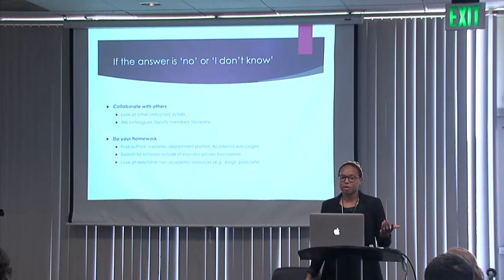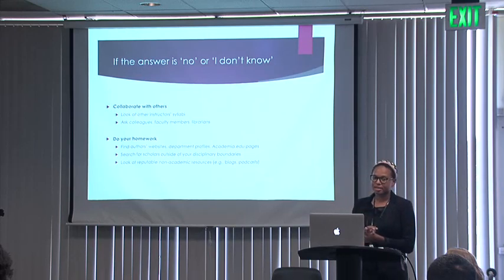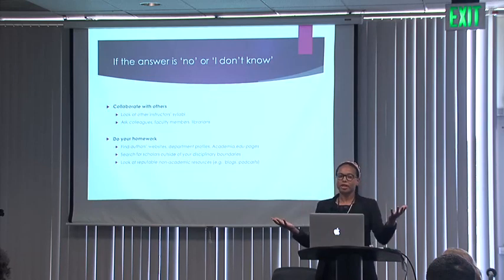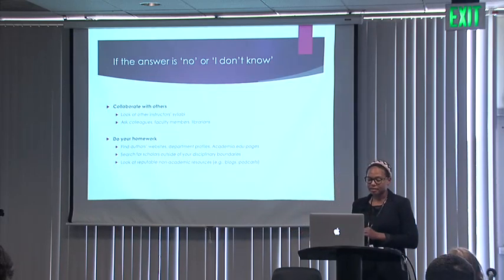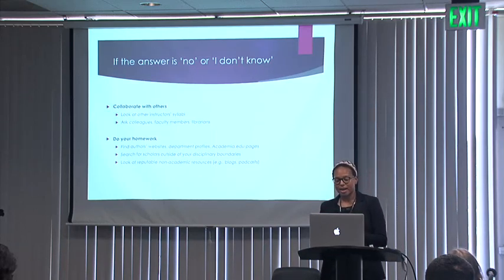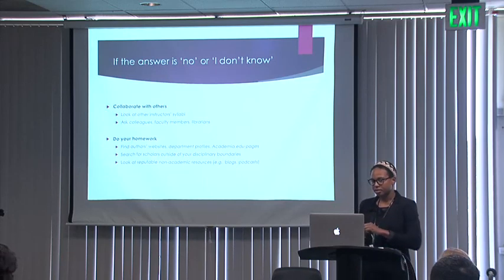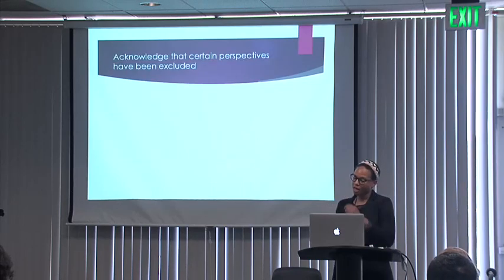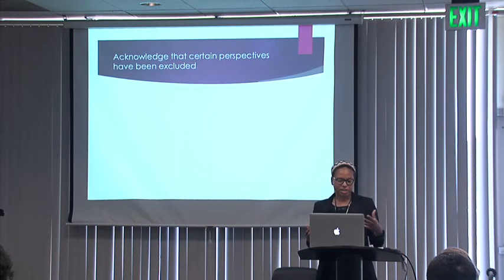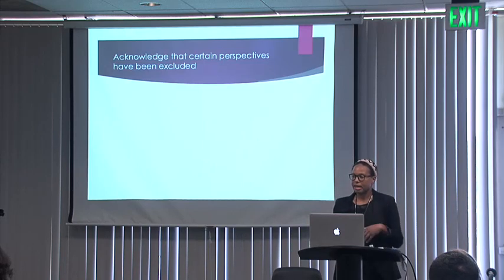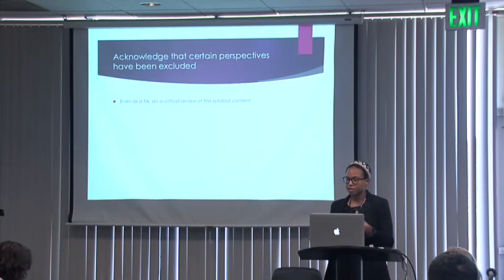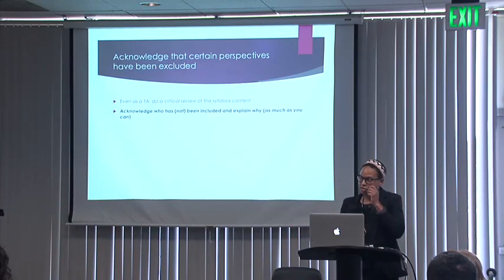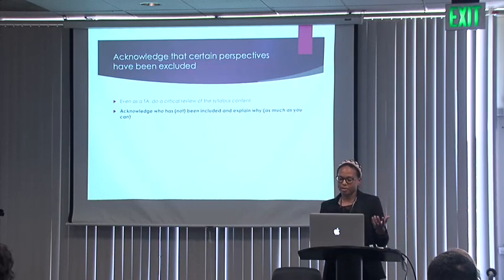As the primary instructor, it's our job to do our homework. Most scholars have some sort of online presence — a department website, an academia page, a personal website, they're on Twitter. We can actively search for scholars, ideally scholars of color in our own disciplines. But sometimes we have to go outside our discipline to find people who really represent what we're trying to teach. Also, looking at reputable non-academic resources is a strategy — if we think about the structural racial barriers within the academy and we're only looking within academia, we're already limiting whose perspectives can be represented. This critical and collaborative construction of the syllabus is important because it better enables you to acknowledge who's been included and who's been excluded, and to talk with your students about that as much as possible.